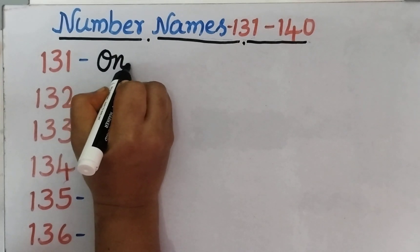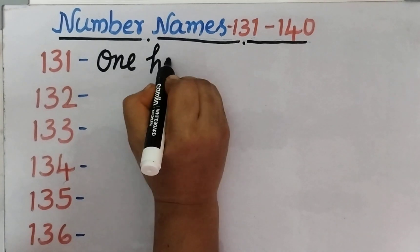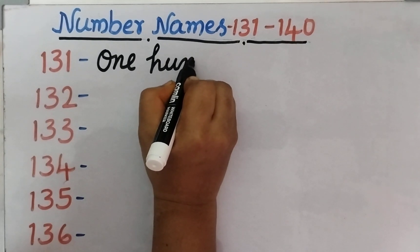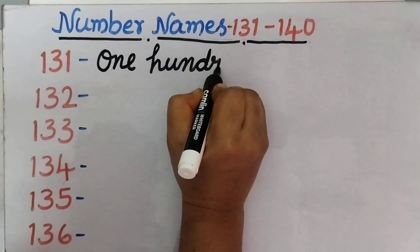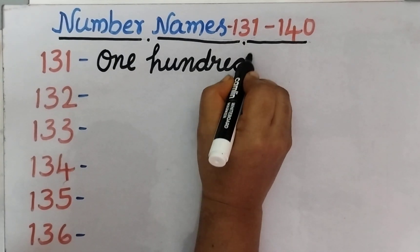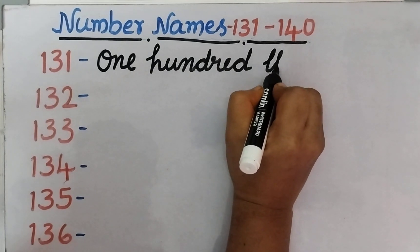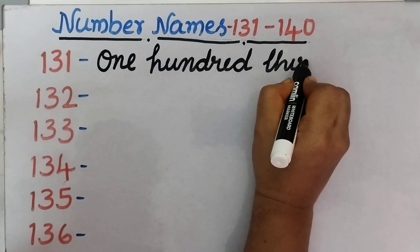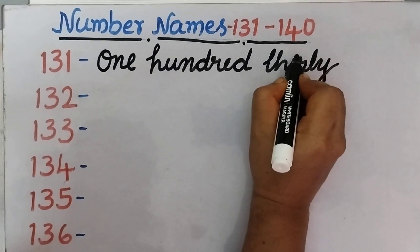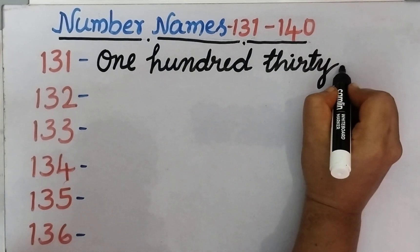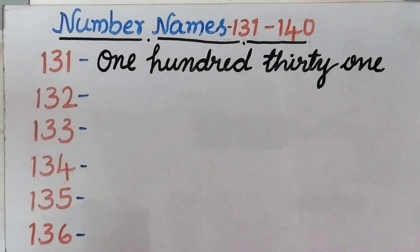1 — O, N, E. 100 — H, U, N, D, R, E, D. 131 — T, H, I, R, T, Y — 30. 1 — O, N, E.